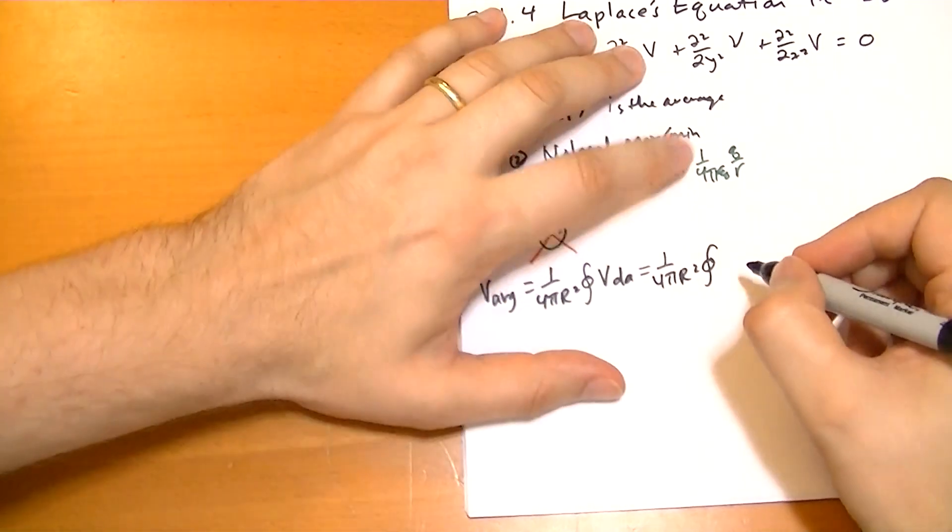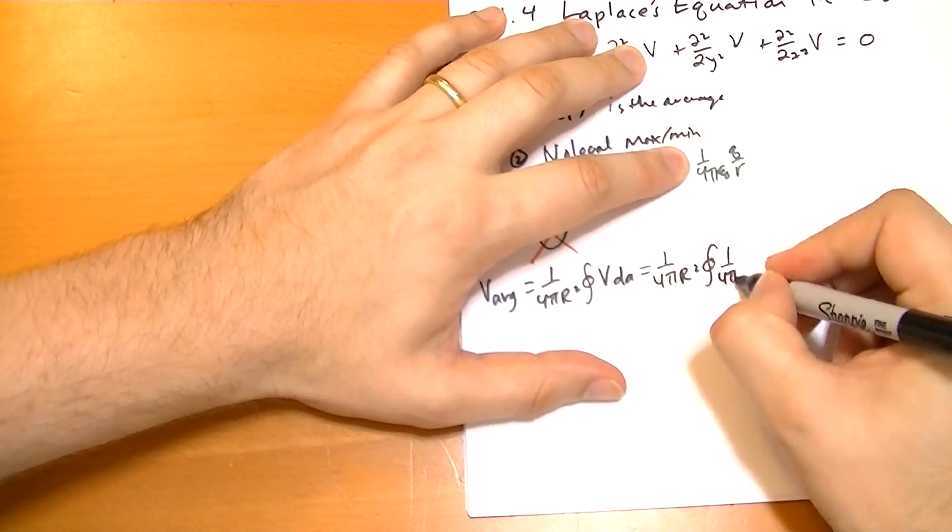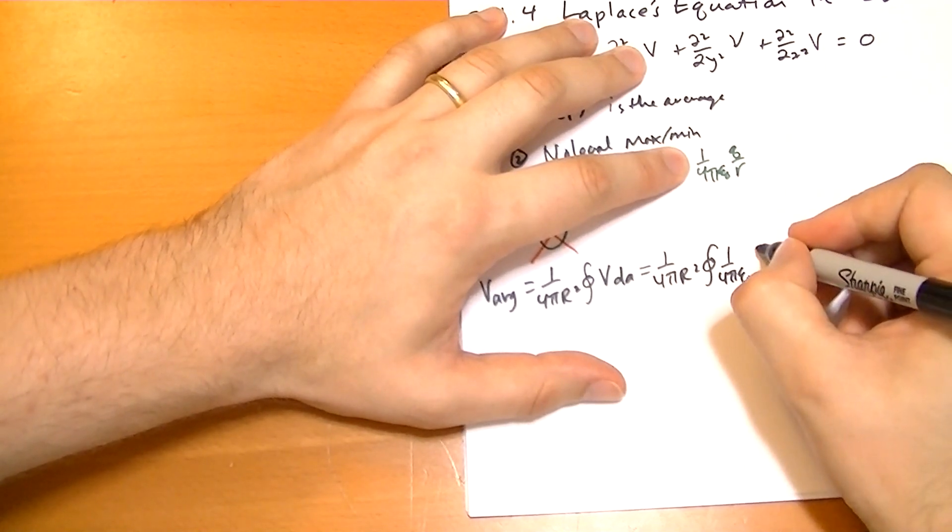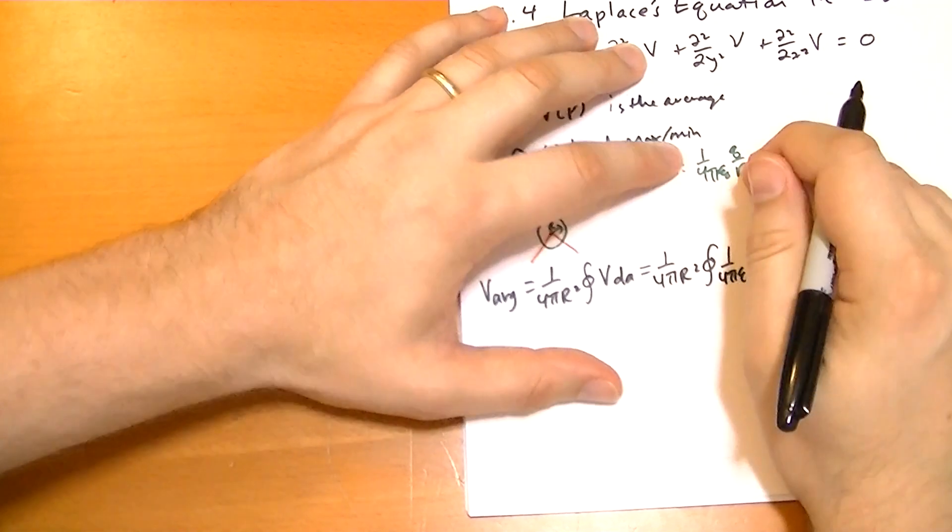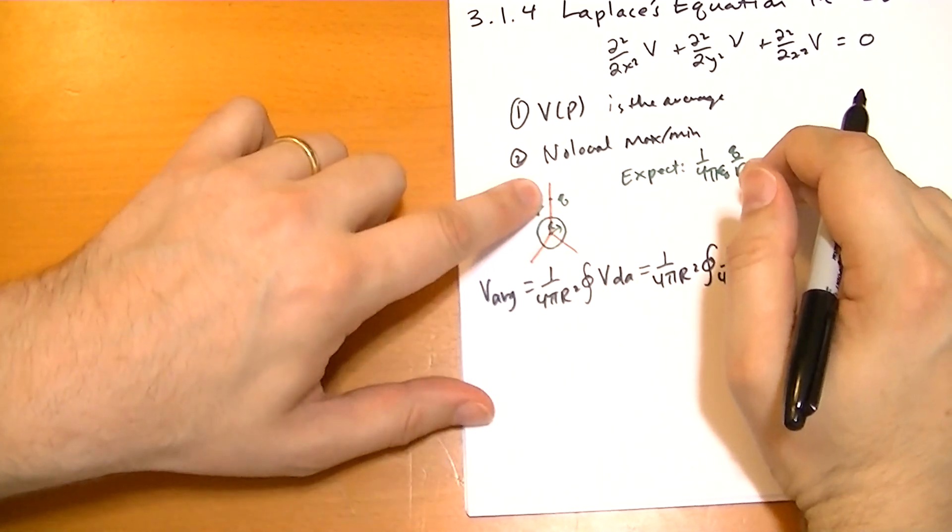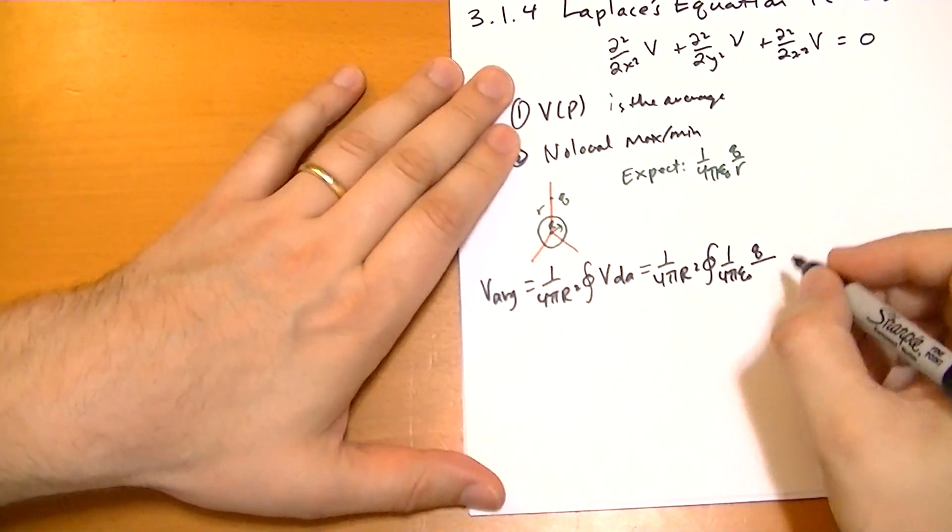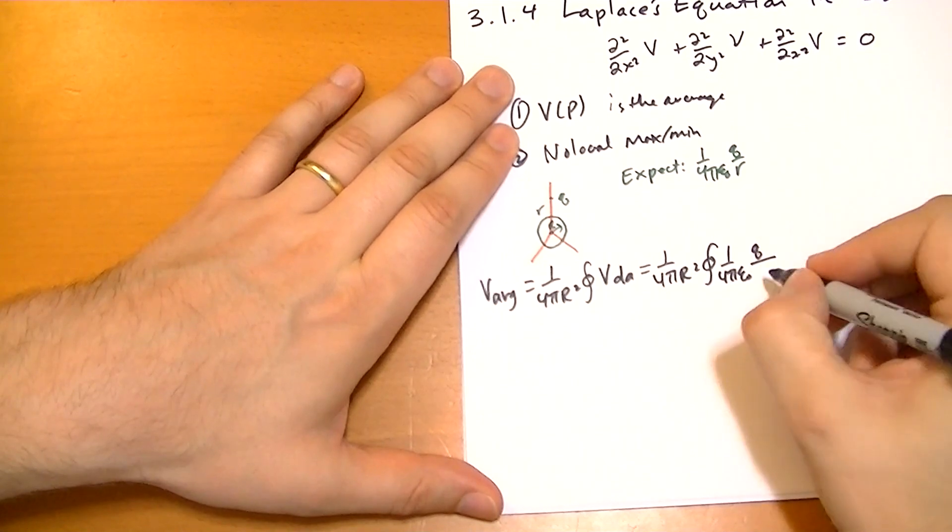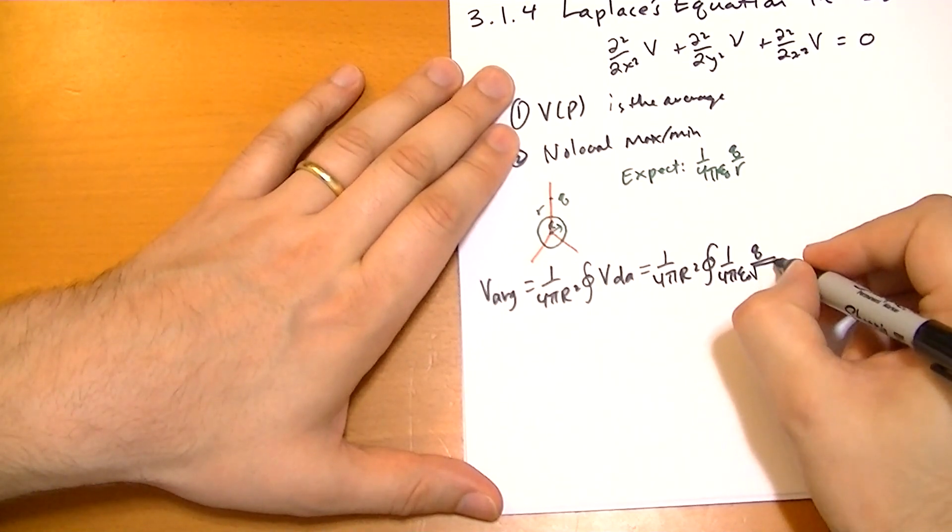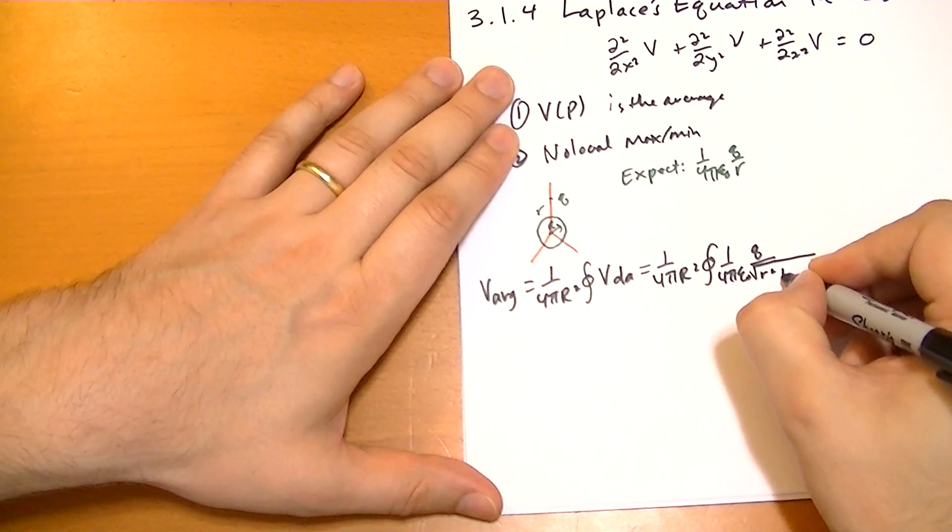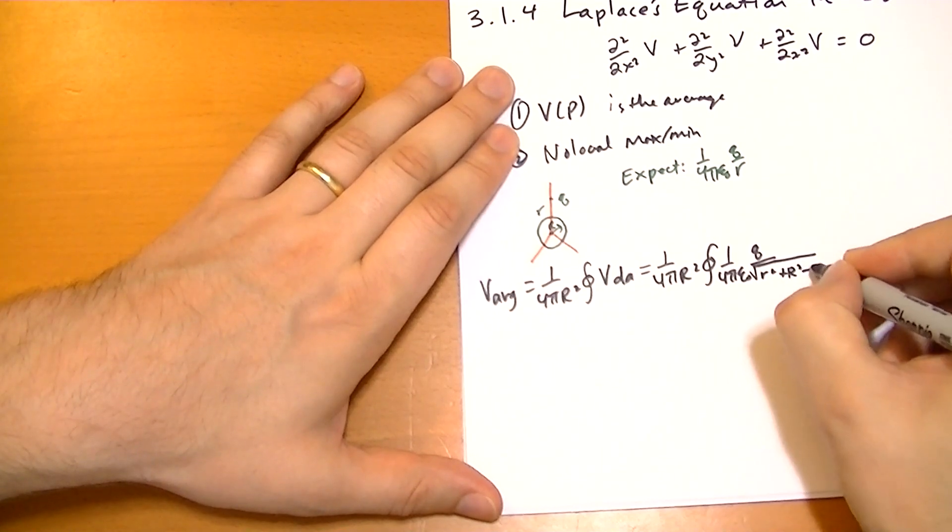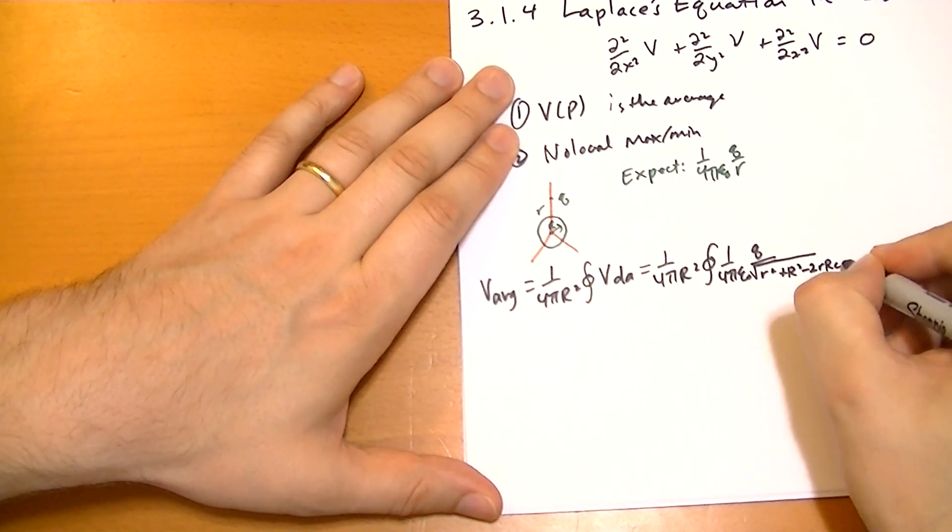The potential at any point along there is 1 over 4 pi epsilon naught times the charge divided by the distance from a point on that sphere to the charge. And that distance is given by the law of cosines as the square root of r squared plus capital R squared minus 2r capital R cos theta.